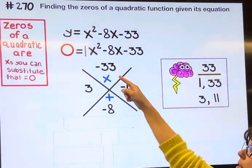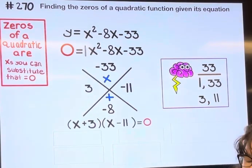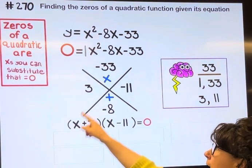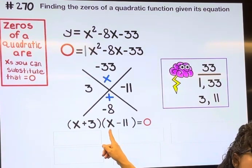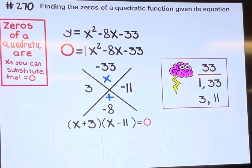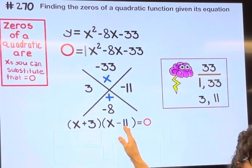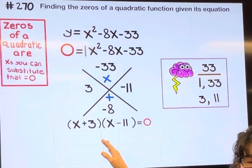Since the number in front of x squared is 1, I can go directly to the factored form: x plus 3 times x minus 11 equals 0. When two things multiply together to get 0, the only way that can happen is if one of those is the number 0.